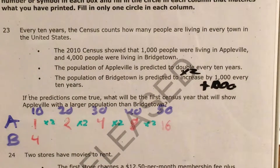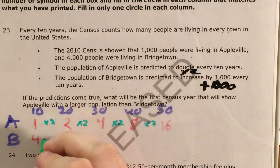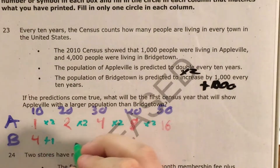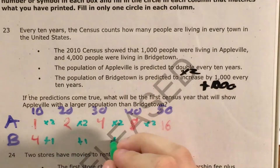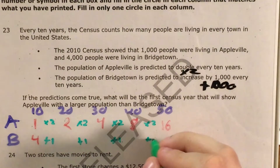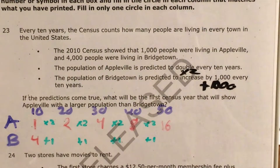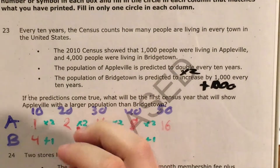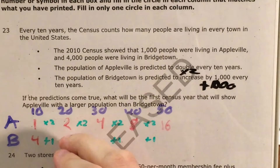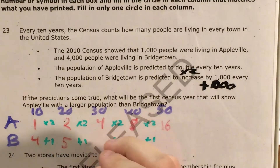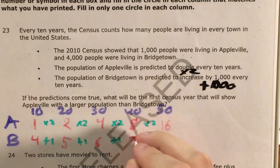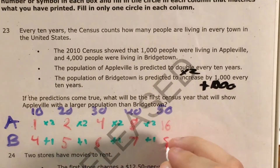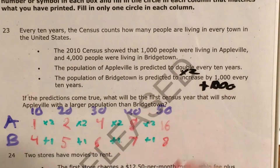For Bridgetown, they're going to increase by 1,000. So 4 plus 1 gives us 5, plus 1 is 6, plus 1 is 7, plus 1 is 8.